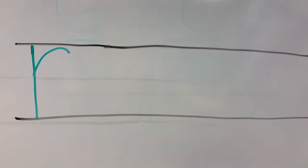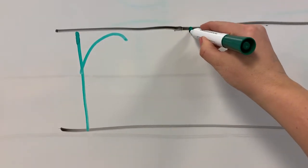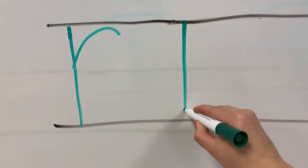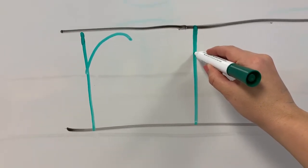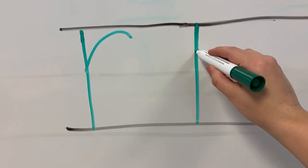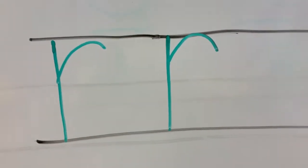We're going to go ahead and start our letter R at the top line. And when you start this, we say the same thing. We say dive down bump. Same place we started with the P. You're going to start just a little bit down and you're going to say swim up and over. That's the letter R.